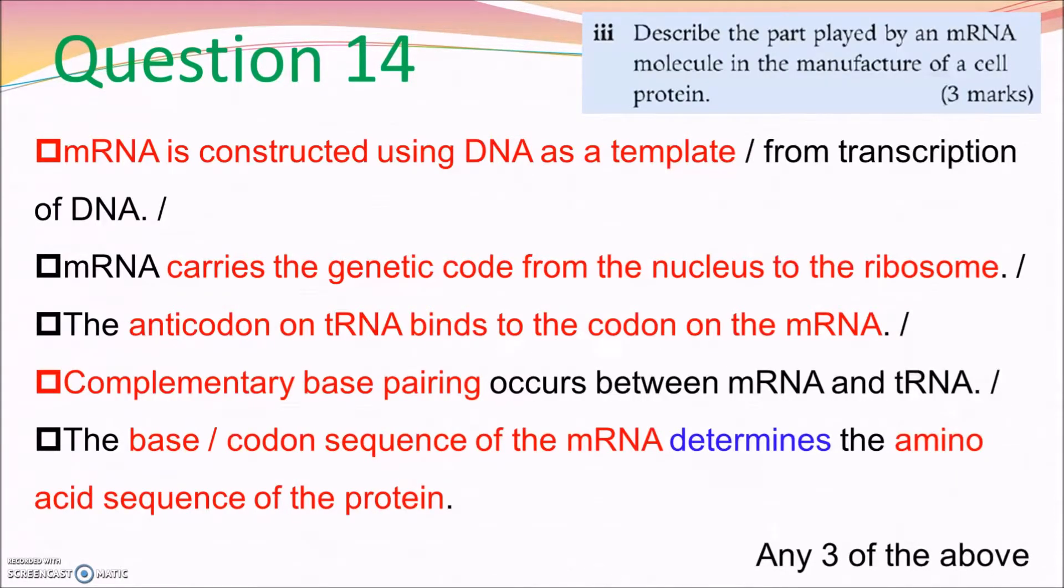So in this slide, I would like to talk about the answers for part 3. That means the role played by the mRNA or any related feature of mRNA for making the protein. So the first one, mRNA is constructed by using the DNA as the template. mRNA carries the genetic code from the nucleus to the ribosome. The anti-codon of the tRNA bind to the codon on the mRNA for translation. Because the transfer RNA, one hand, they are the anti-codon, and the other hand, they contain the corresponding amino acid. Complementary base pairing occur between mRNA and tRNA. That means the codon and the anti-codon pair. And the last part is the base sequence of the mRNA determines the amino acid sequence of the protein.